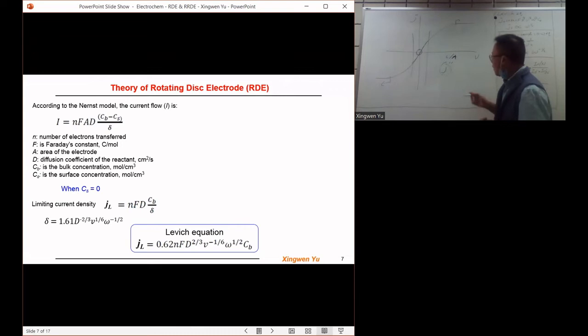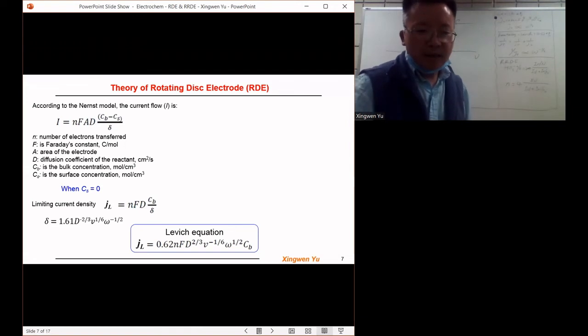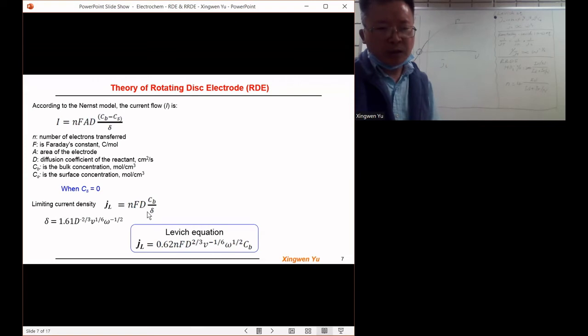If the electrode reactions are purely controlled by the mass transfer and reach the maximum level, we call that current density the limiting current, j_L. Limiting current j_L can be expressed by this equation. If we consider C_S is zero and if we use j rather than i to represent current density, the limiting current can be expressed as nFDC_B/δ.